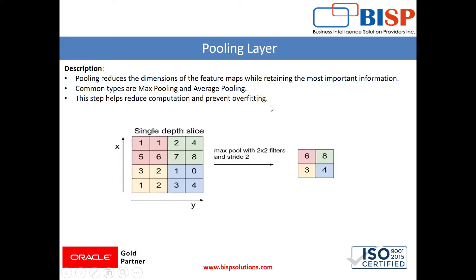The second layer is the pooling layer. The pooling layer reduces the dimensions of the feature maps while retaining the most important information — it reduces the size of the image. Common types are max pooling and average pooling. We will discuss these techniques in upcoming videos. This step helps reduce computation and prevents overfitting, especially when a very large image is given.